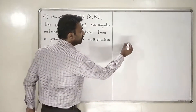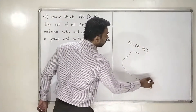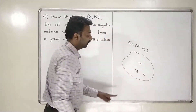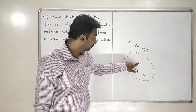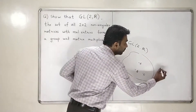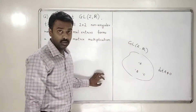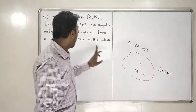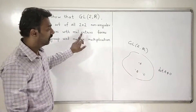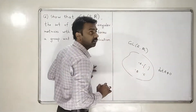So, what is GL2R? GL2R is: I am going to collect all matrices in a set. And in that set, those matrices have the property that every matrix here is a 2x2 matrix and it is non-singular. What is the meaning of non-singular? It means the determinant of that matrix will not be equal to 0. Such matrices are non-singular matrices. The entries of those matrices are real numbers. So in A, I will have all those 4 entries which are real numbers.